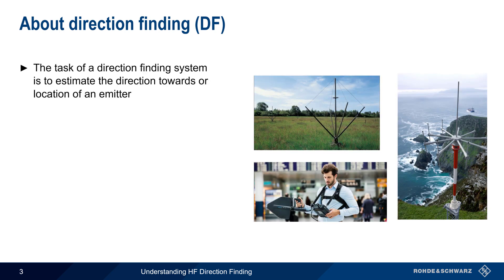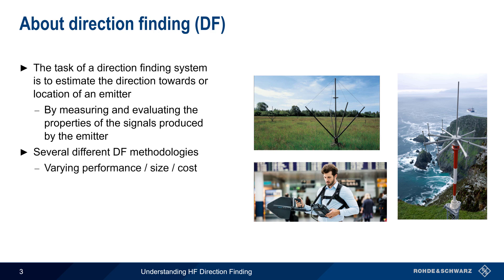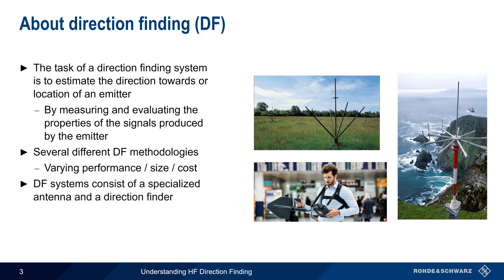Direction finding, also sometimes referred to as radiolocation, is the process of estimating either the direction towards or the location of an emitter. This is done by measuring and evaluating the properties of the signals produced by the emitter, most often by looking at changes in the amplitude, frequency, and/or phase of the received signal. All DF systems consist of two principal elements: a specialized antenna and a direction finder or scanner that processes the signals received from the antenna and uses this information to produce a direction or location result.